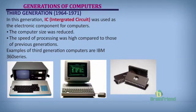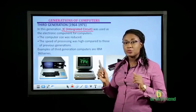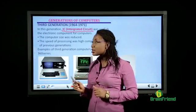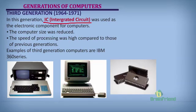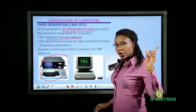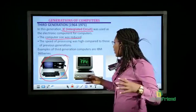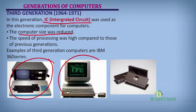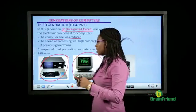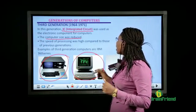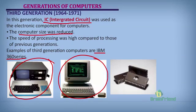In the third generation, integrated circuits — IC — were used as electronic components. The computer size was reduced; they became smaller than previous generations. The processor speed was also faster. An example is the IBM 360 series.